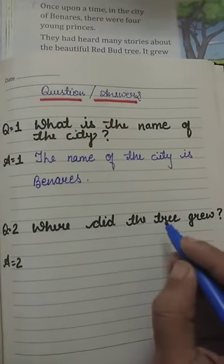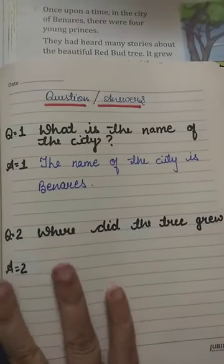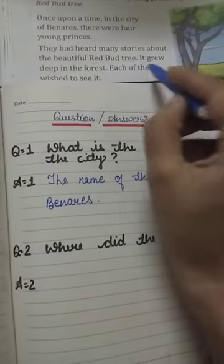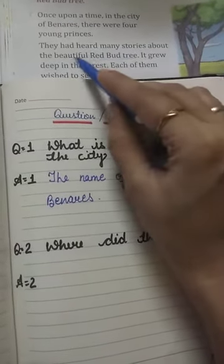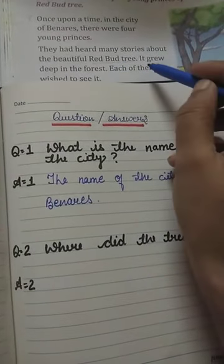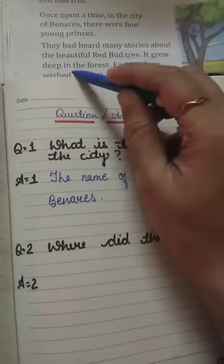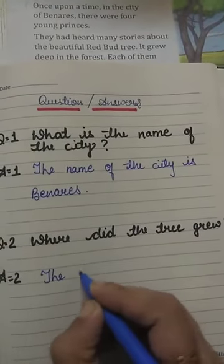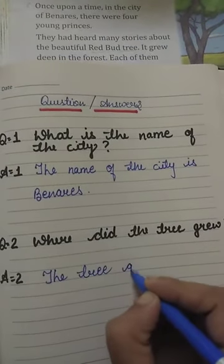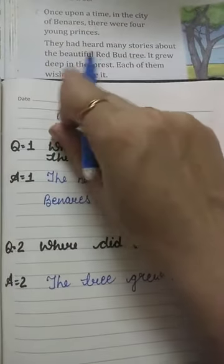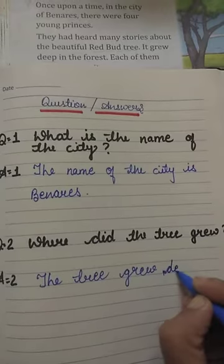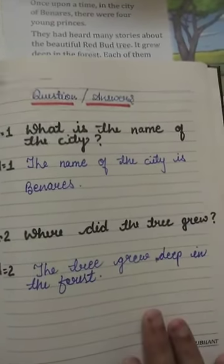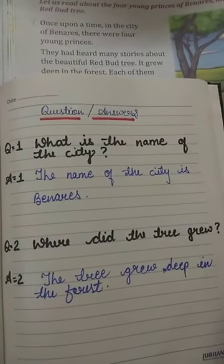The second question is: 'Where did the tree grow?' The red bird tree grew deep in the forest. From the passage: 'They had heard many stories about the beautiful red bird tree. It grew deep in the forest.' So our answer is 'forest.' We write: 'The tree grew deep in the forest.' So we have identified the question and the answer: deep in the forest.